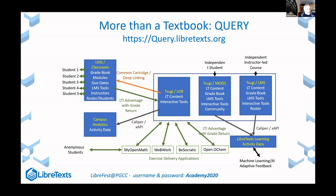That brings us to our query library. If you go to query.libretexts.org, you can see 100,000 existing problems cultivated from these different databases. It's a little harder to find things because it's not semantically organized the same way our libraries are, but you can do searches to find content via meta tags.